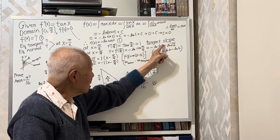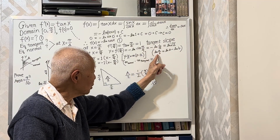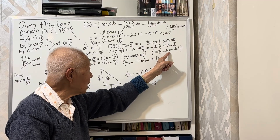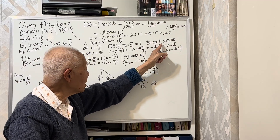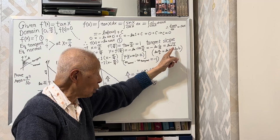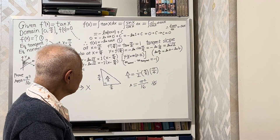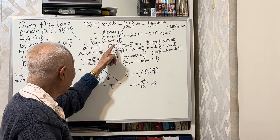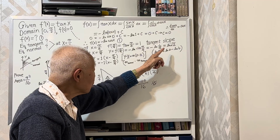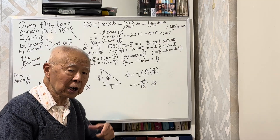Now, log of one over square root two equals log one minus log square root two. Since log one equals zero, this simplifies to log square root two. So the y-value is log square root two, and the point on the graph is (pi over four, log square root two).